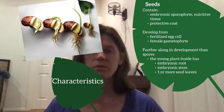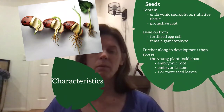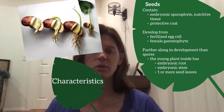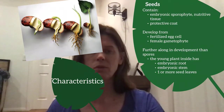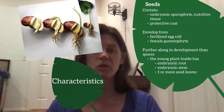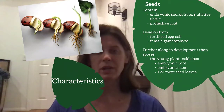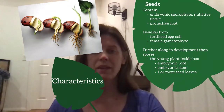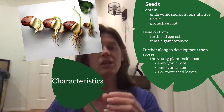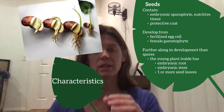Mosses and ferns we saw earlier reproduced by spores — haploid cells that disperse and germinate to produce the gametophytes. Now spores will still be used in reproduction, but they are dispersed by seeds. Seeds are a very important adaptation for life on land. Remember that spores are a single cell, while the seed contains the germination of that spore and contains the embryo.